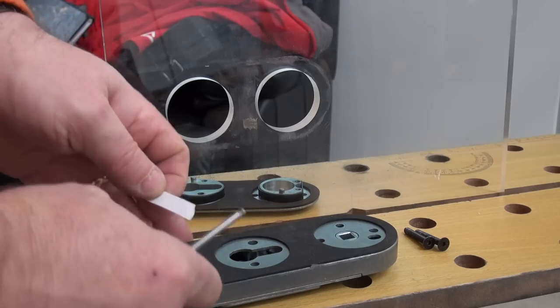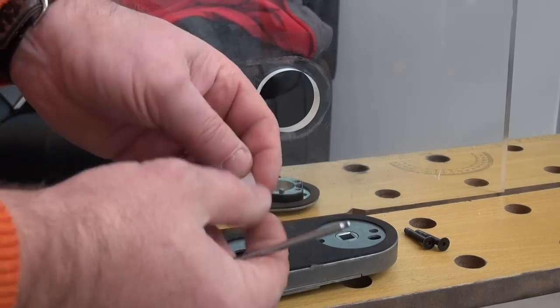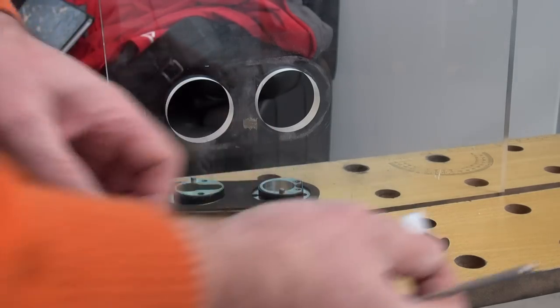Fitting an Infinity Lock. First of all, the gasket - you need to take off the backing tape and stick the gasket to the lock.